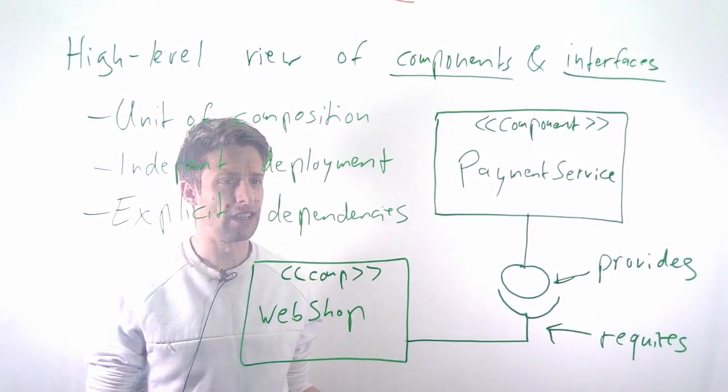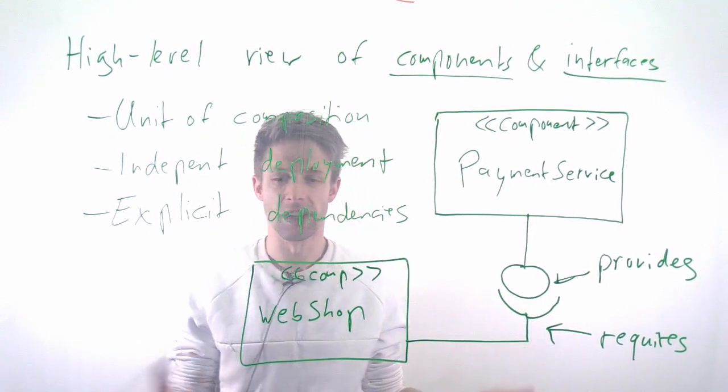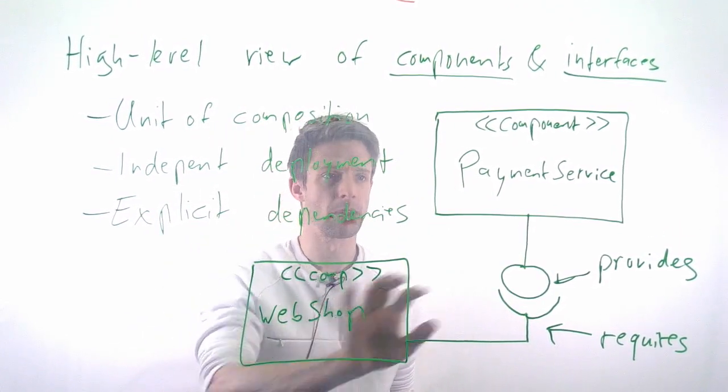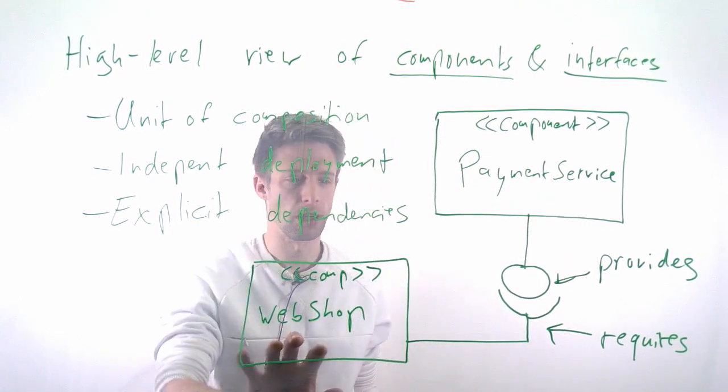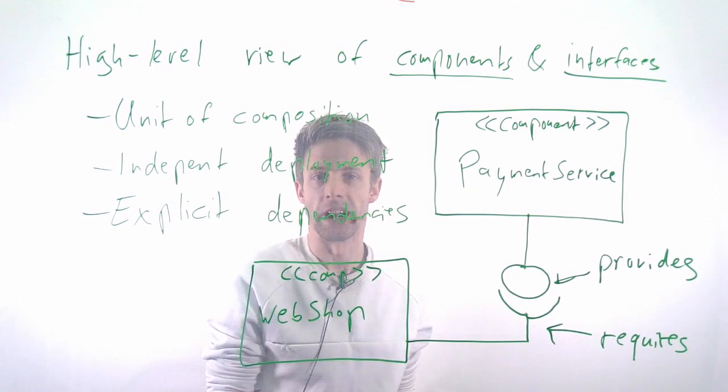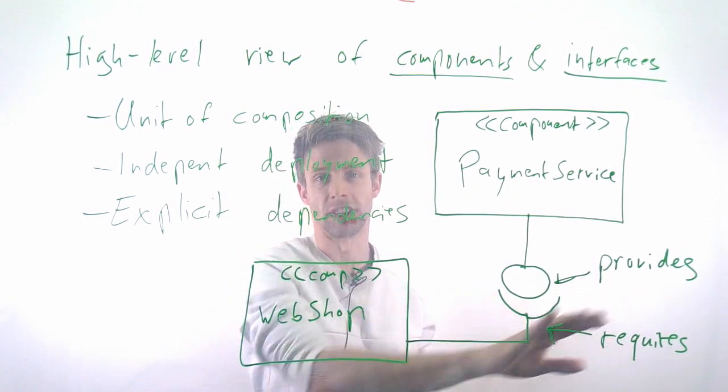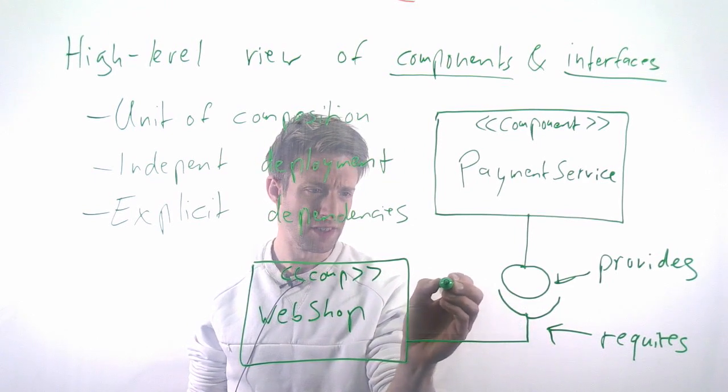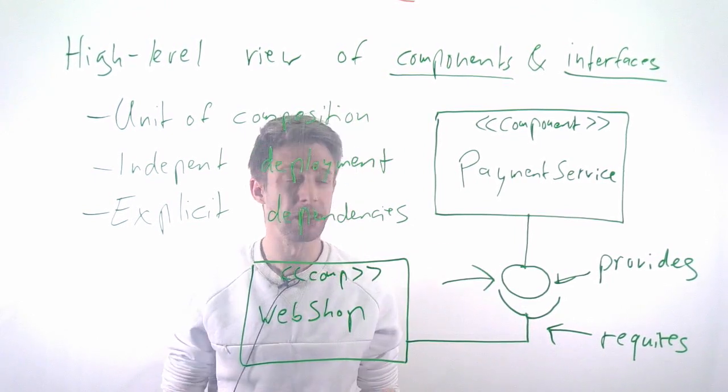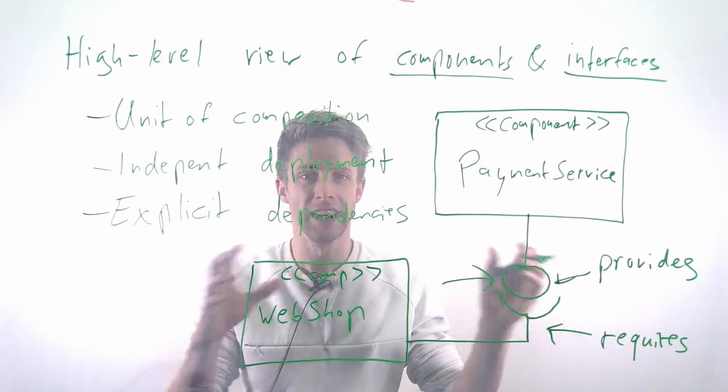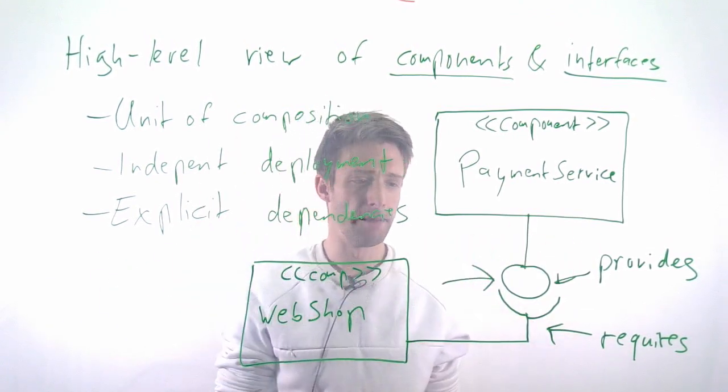This is how we typically represent an overall system or architecture. In our case, we have two components: the webshop and the payment service. The webshop requires some kind of payment service, and the component we have here is actually providing this functionality. This is often the preferred way of drawing because it's very simple. You can represent an entire system on an extremely basic diagram.